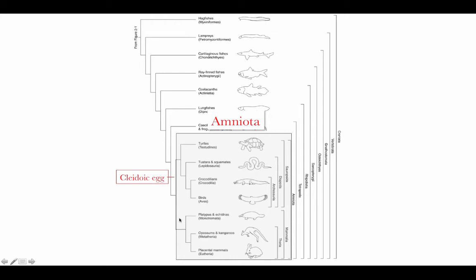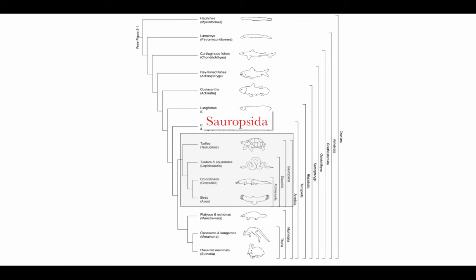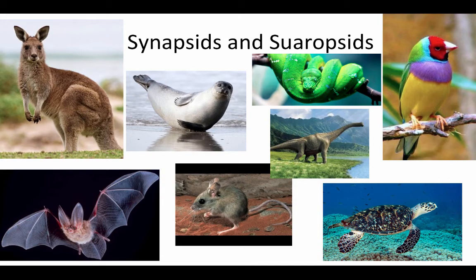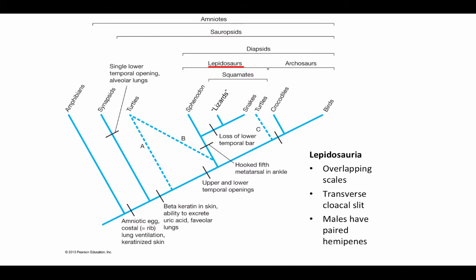The amniotes consist of basically all of the tetrapods excluding the amphibians, and are divided into two lineages: the Sauropsida, which include the birds and reptiles, and the Synapsida, which includes all of the mammals. All of the different species of mammals — characterized by fur and mammary glands — are part of the synapsid lineage, such as kangaroos, bats, seals, and mice. All of the amniotes that continue to lay cleidoic eggs are part of the sauropsid lineage, including snakes, birds, dinosaurs, and turtles.